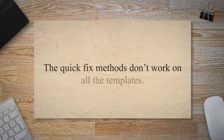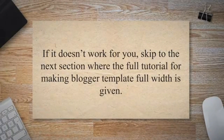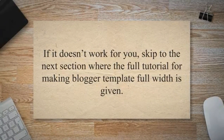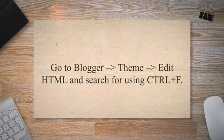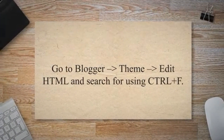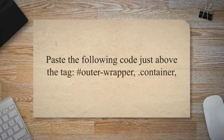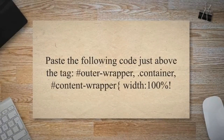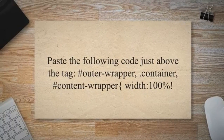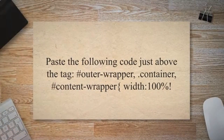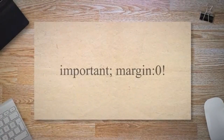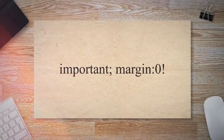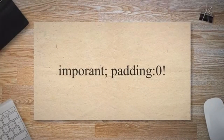The quick fix methods don't work on all templates. If it doesn't work for you, skip to the next section where the full tutorial is given. Go to Blogger > Theme > Edit HTML and search for </head> using Ctrl+F. Paste the following code just above the </head> tag: <style> #outer-wrapper, .container, #content-wrapper { width: 100% !important; margin: 0 !important; padding: 0 !important; } </style>